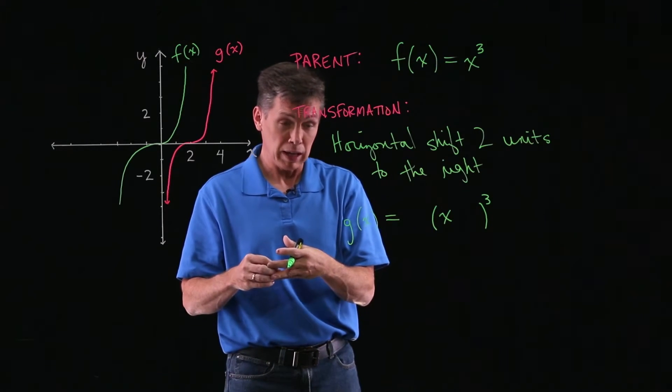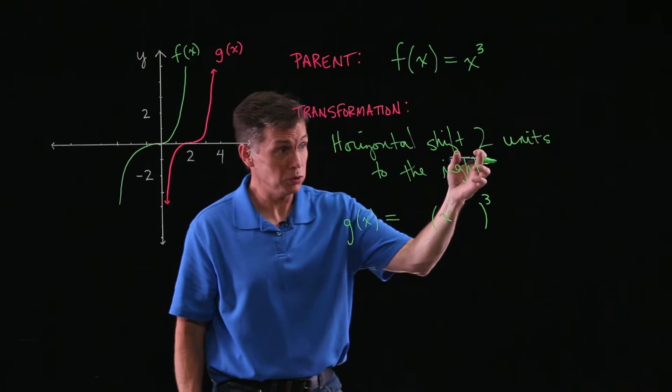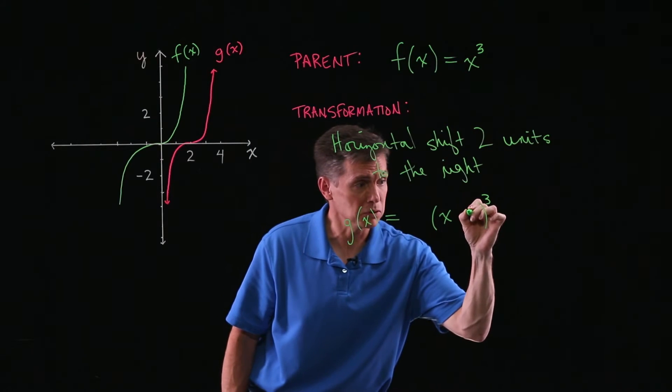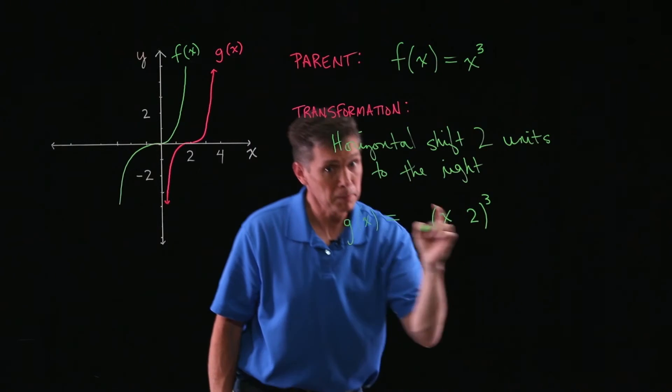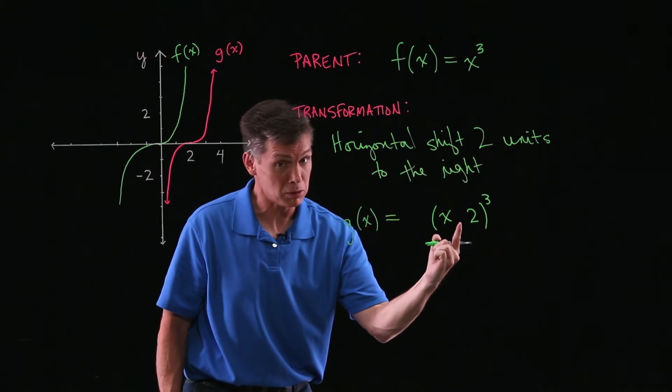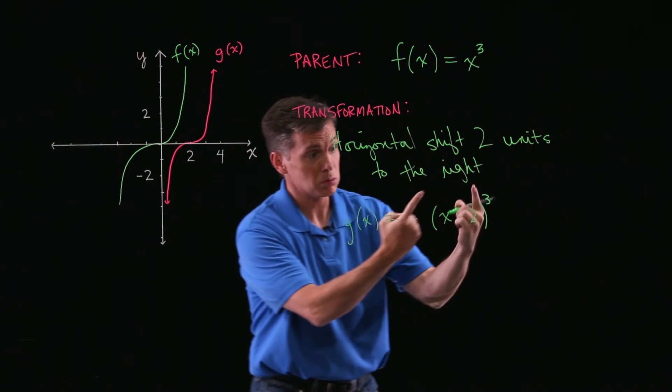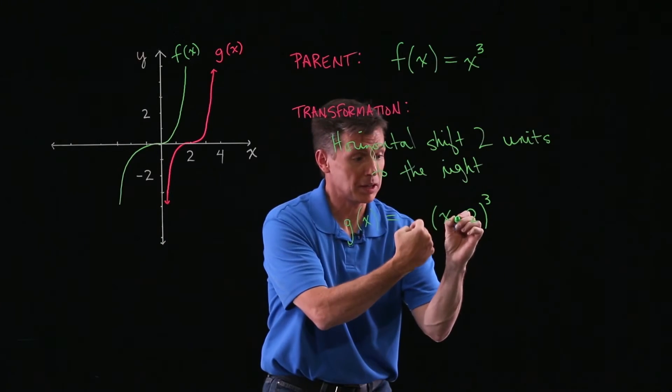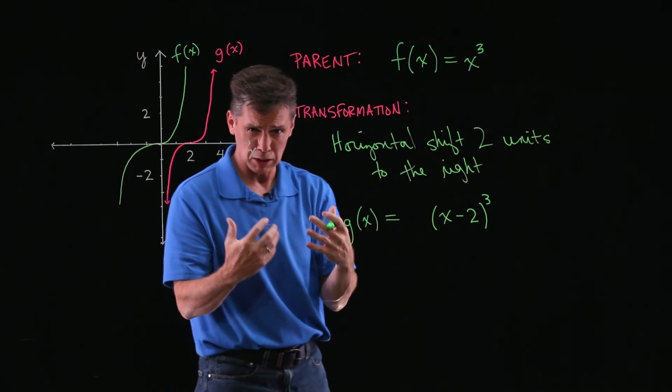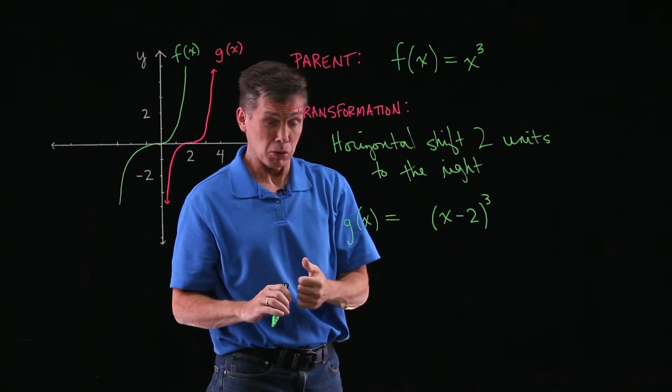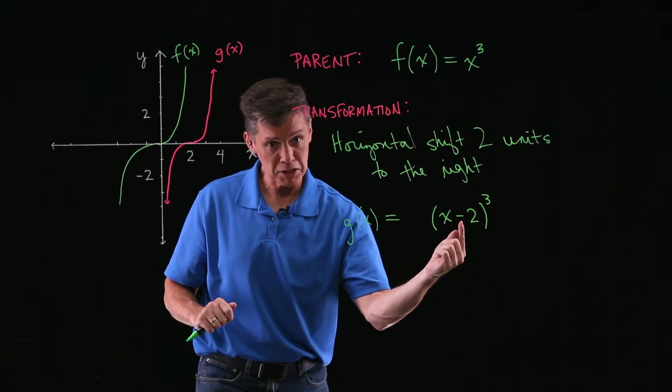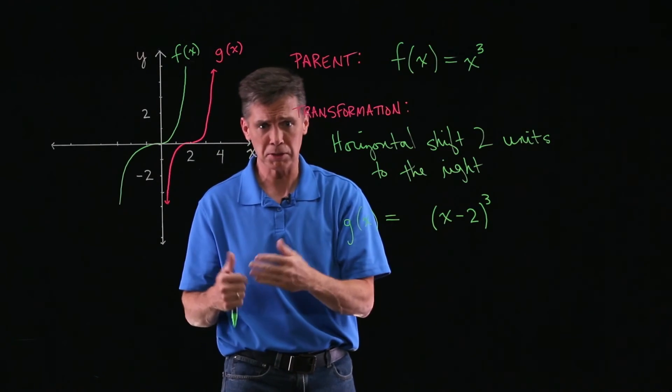Now you have to figure, OK, well, two units is easy enough to realize, well, this is going to be a two right there. But then you want to make sure you have either the correct addition or subtraction. Horizontal shifts to the right are actually subtraction. That's part of what you're trying to learn. And remember is horizontal shifts to the right are actually subtraction inside. Shift to the left would be addition.